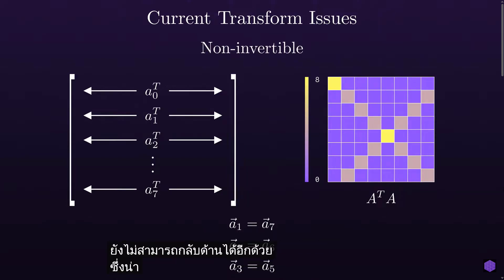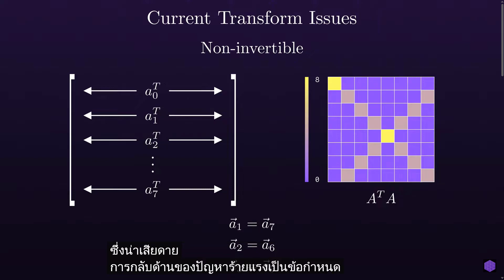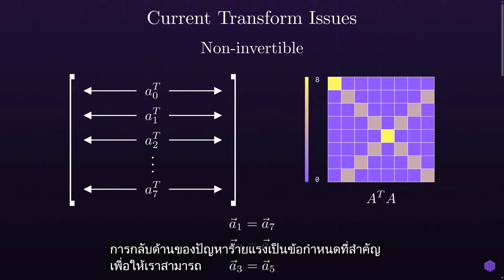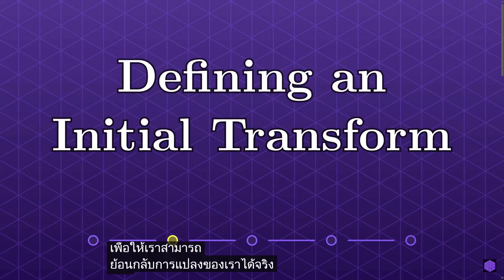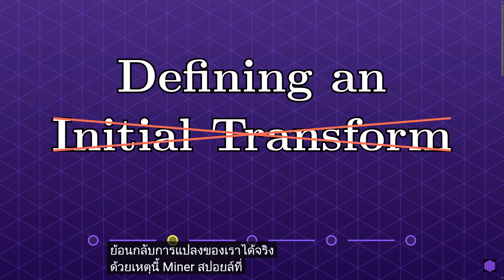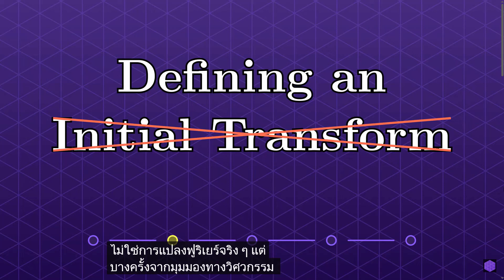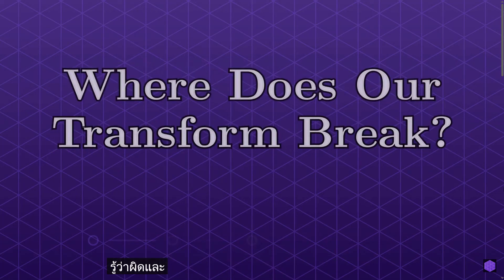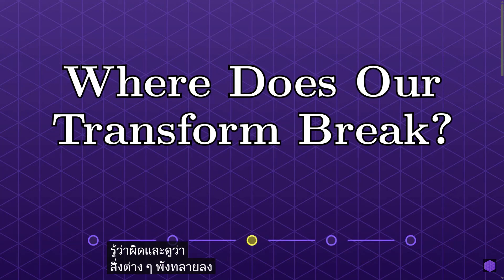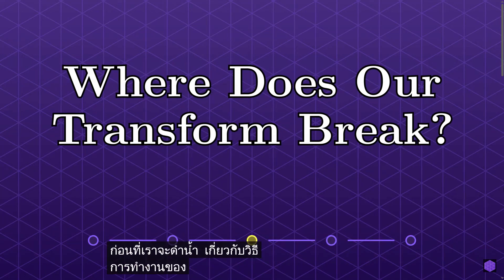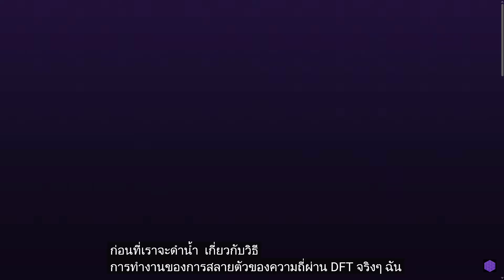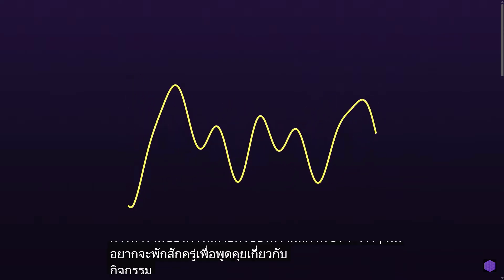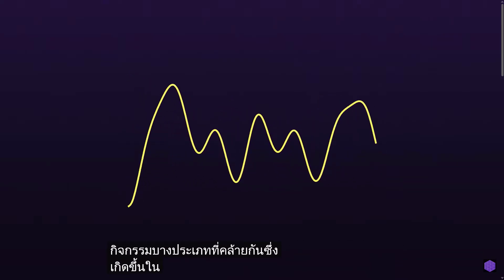Because multiple rows of our analysis frequency matrix are identical, our matrix is not only non-orthogonal — it's also non-invertible. This is unfortunately a serious problem, since invertibility is an essential requirement so that we can actually reverse our transform. As a result, this is not the actual Fourier transform. But sometimes from an engineering perspective, it's fun to try something we know is wrong and see where things break down. Before we dive into how frequency decomposition via the DFT really works, I want to take a quick aside.